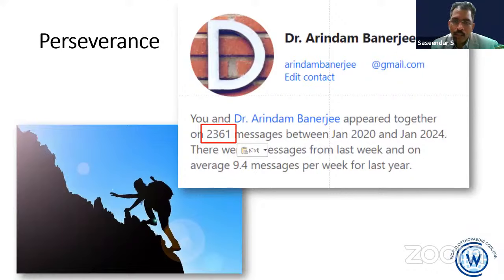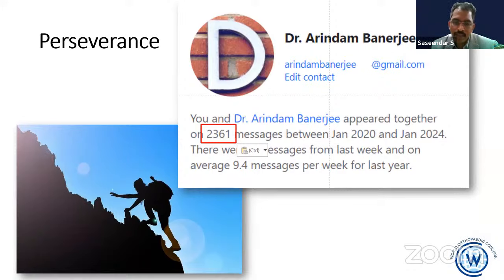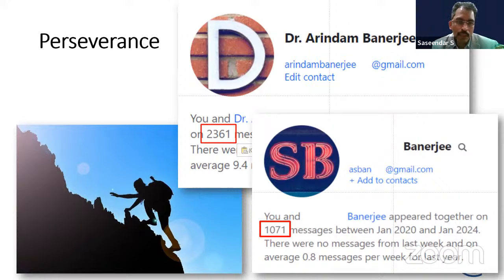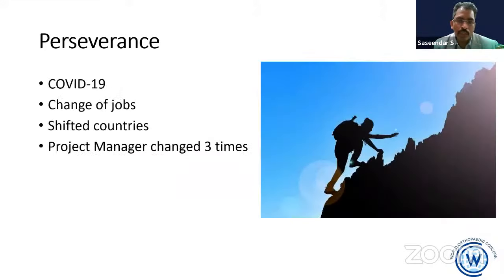For example, Dr. Arindam has two email addresses and I have two email addresses. Between 2020 and 2024, there were 2,361 emails exchanged between myself and Dr. Arindam with one of his email addresses. The other had 1,071. And I'm not even talking about my other email address. This is the amount of communication that has to keep going up and down — and in addition, numerous phone calls and personal meetings, all very important for the making of this book.